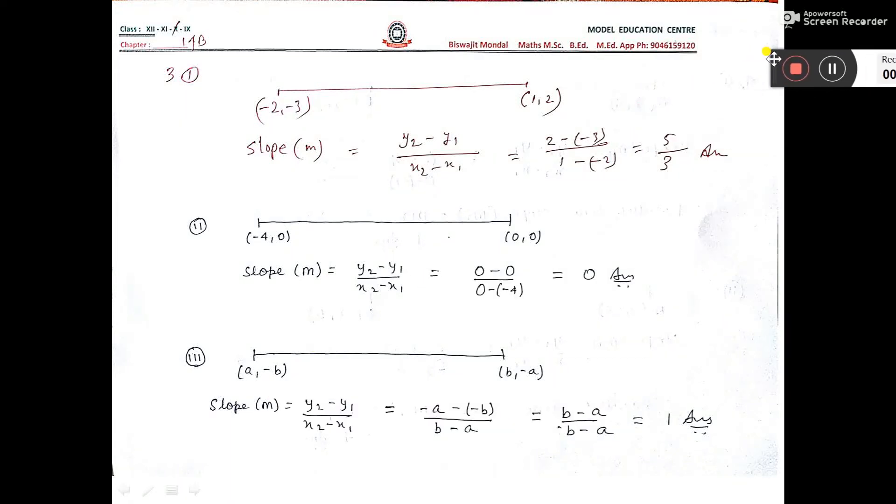We have to find the slope. Now, how to find slope? Slope is denoted by m. You see it is written. Two points are there.